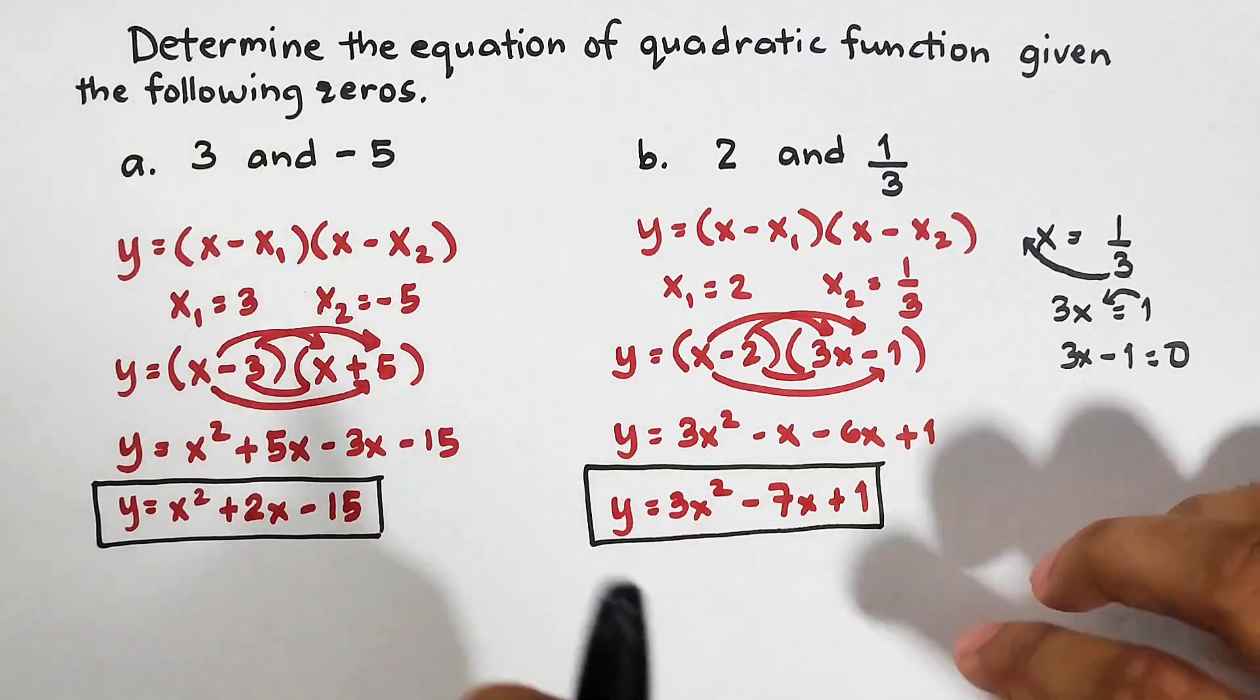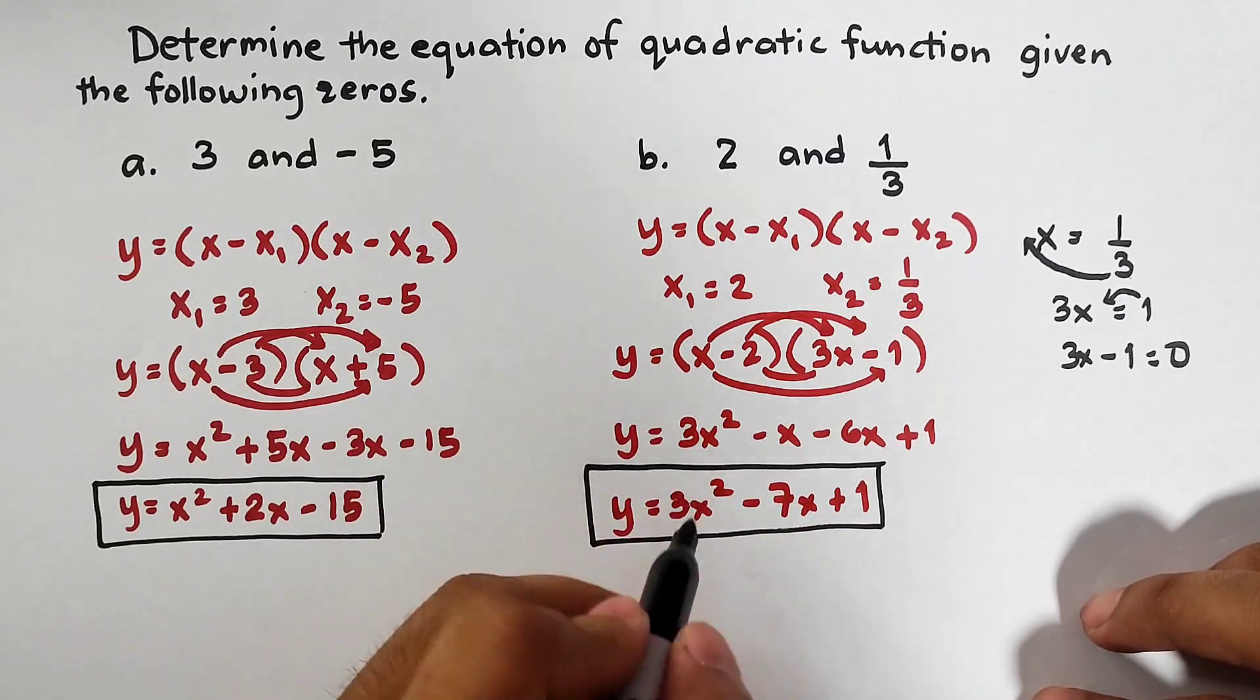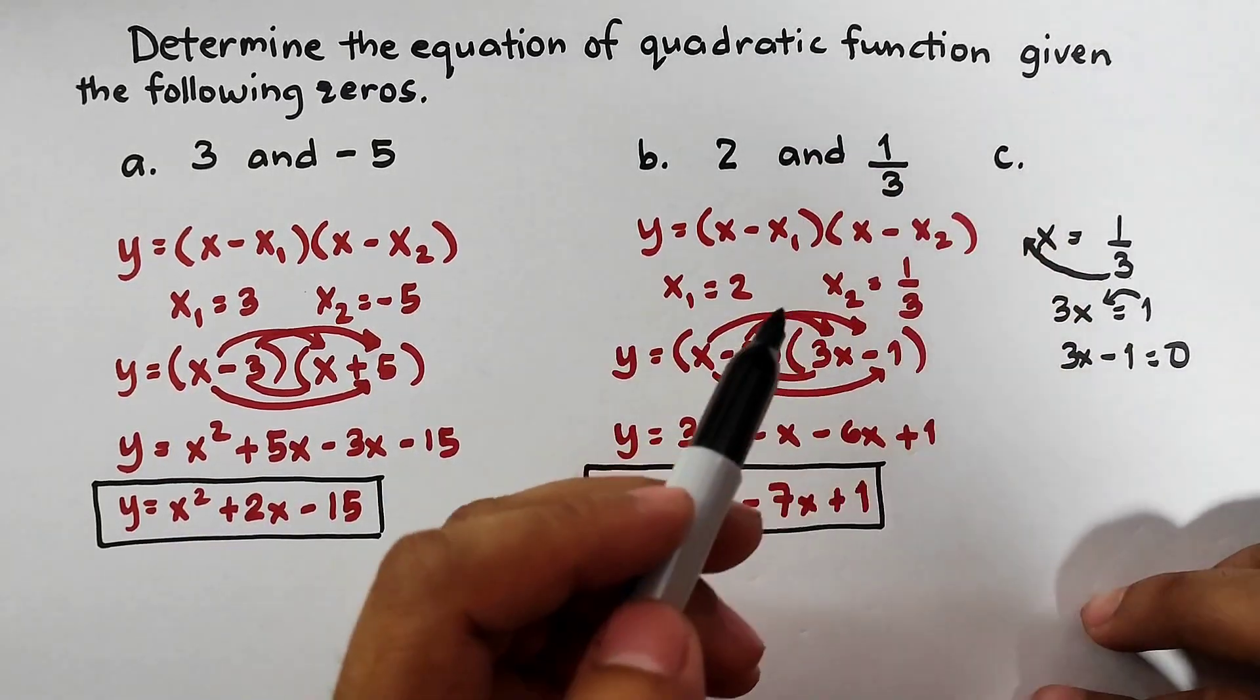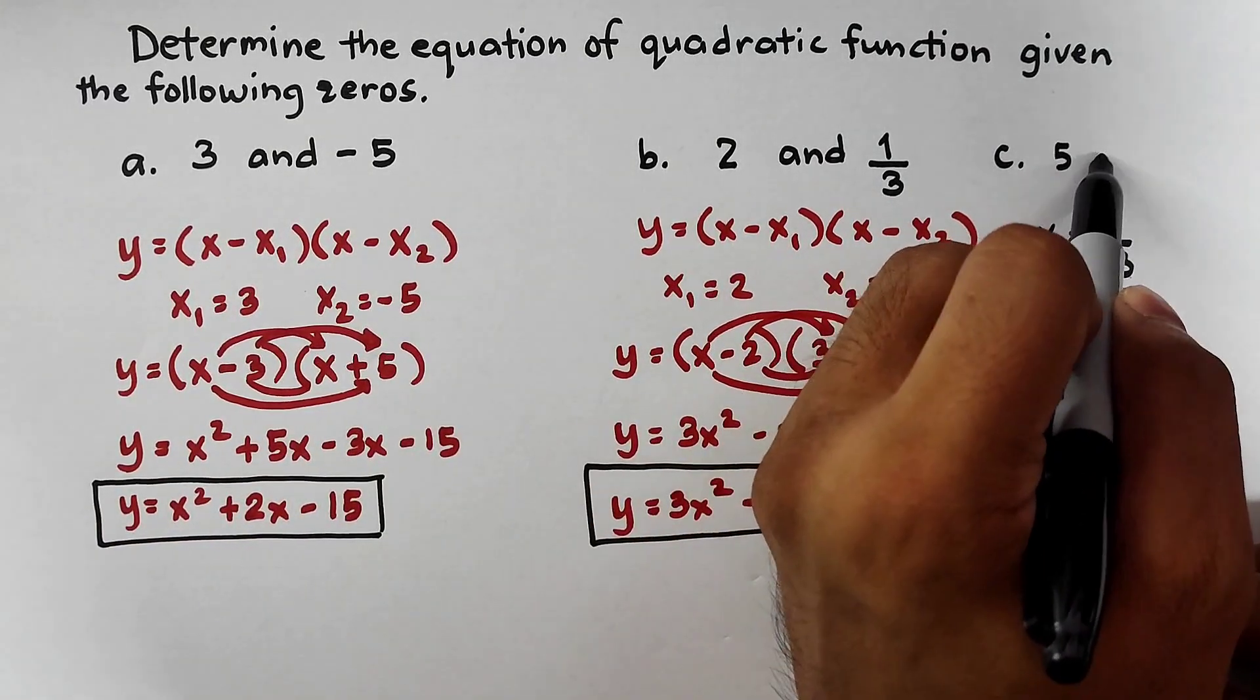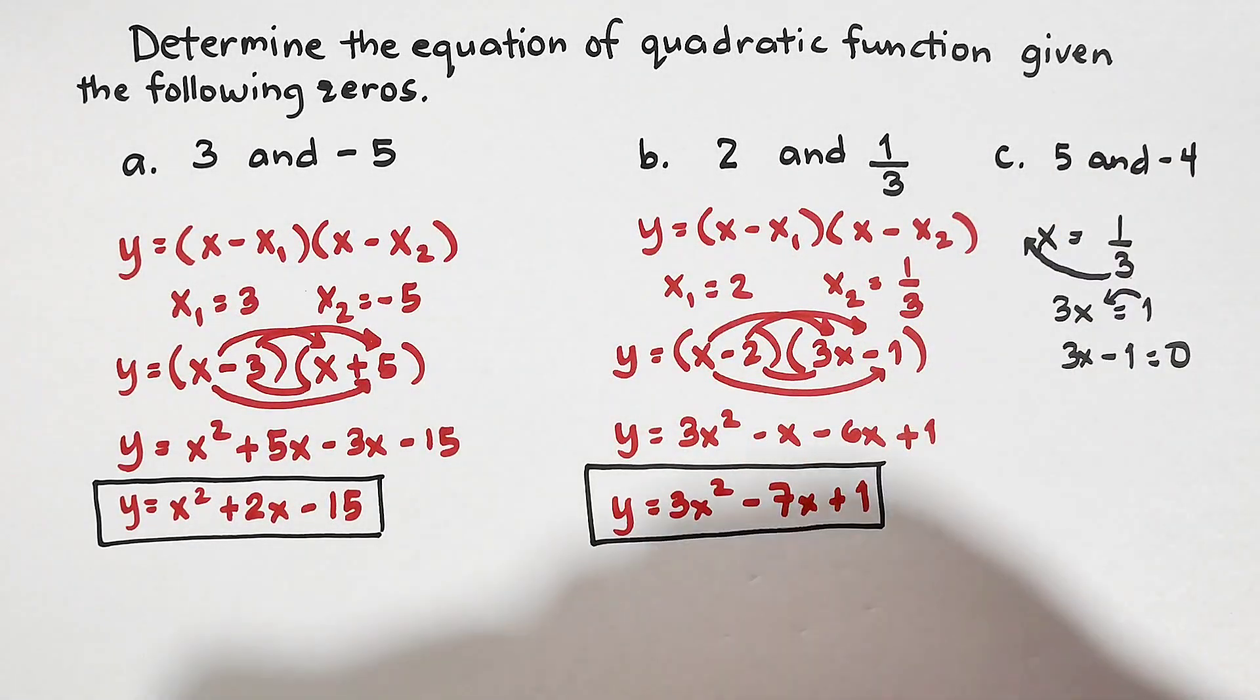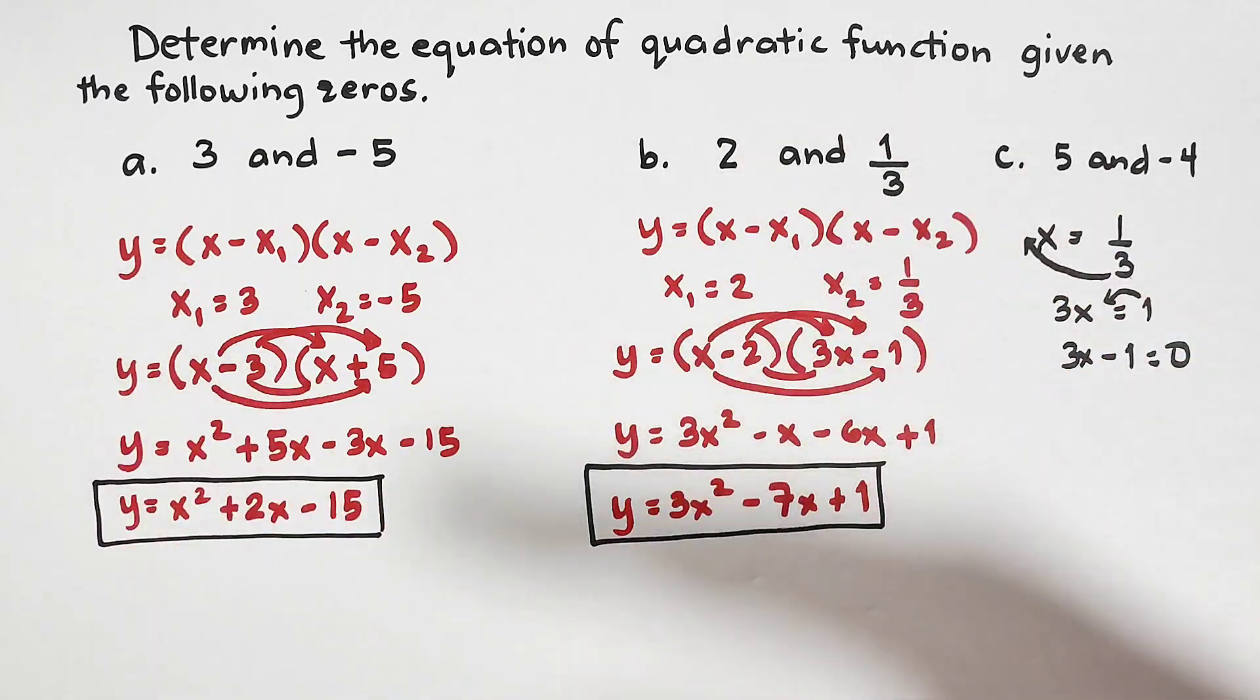So, I hope guys, you learned something from this video. And as part of our routine, let me give you the third example. This is letter C. I want you to determine or find the equation of the quadratic function given the zeros 5 and negative 4. So, I hope guys, you learned something from this video on how to find or determine the equation of a quadratic function given the zeros or the intercepts of any quadratic function.